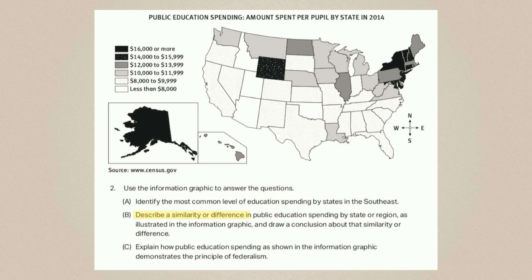Part B says: describe a similarity or difference in public education spending by state or region as illustrated in the information graphic, and draw a conclusion about that similarity or difference. Notice it's asking you to describe — which means identify and explain — and then draw a conclusion. Since it asks you to do two things, letter B is worth two points. You only need to address a similarity or a difference, not both.